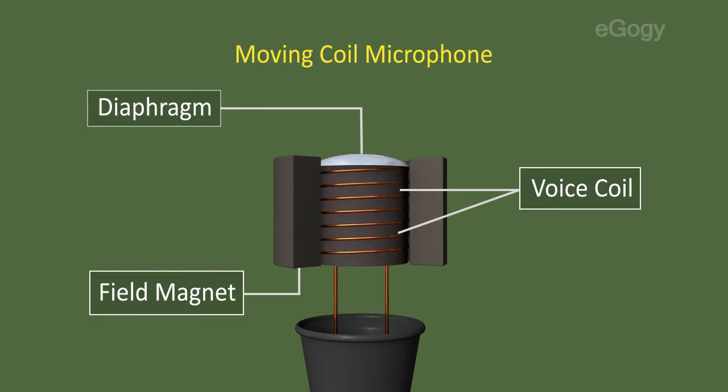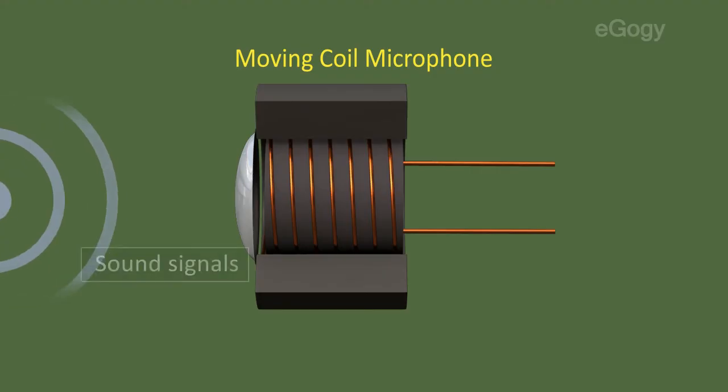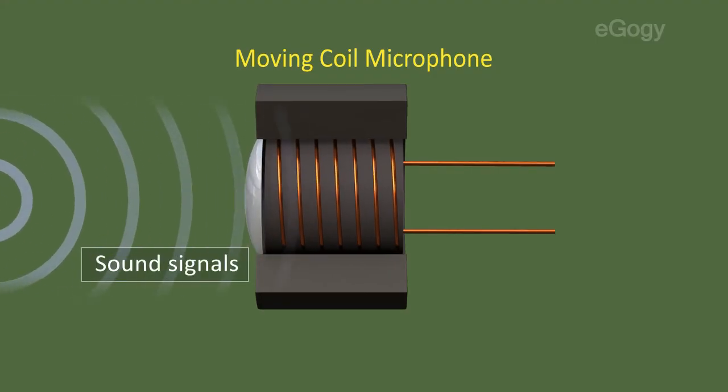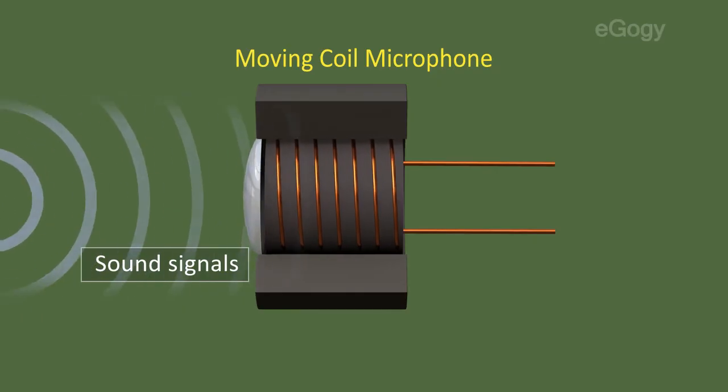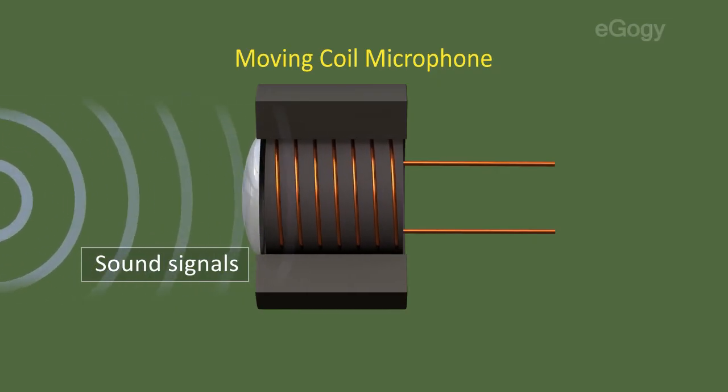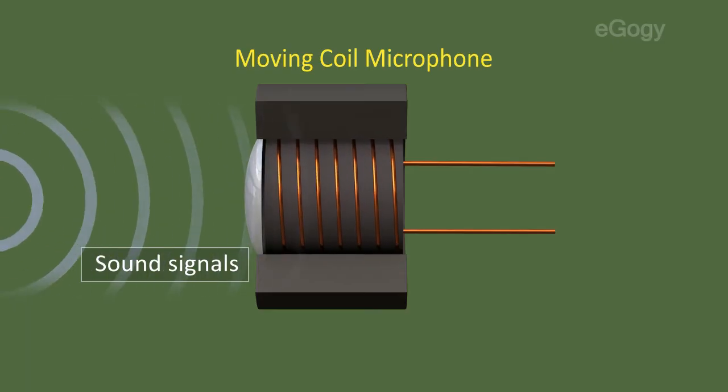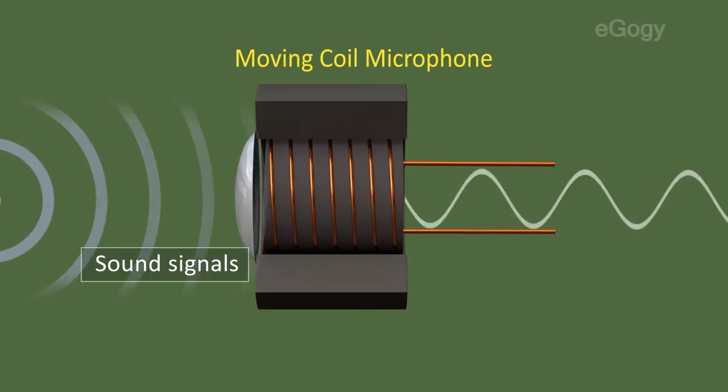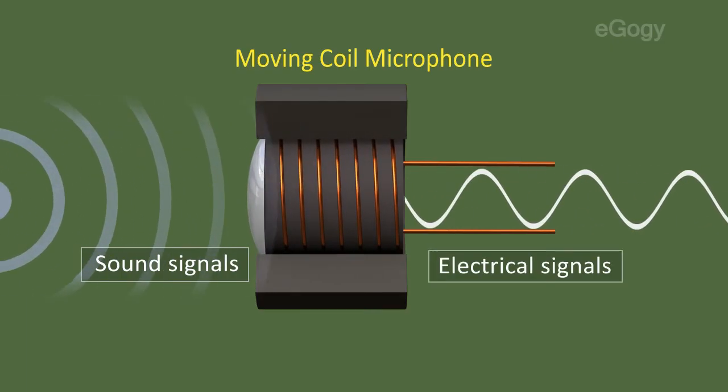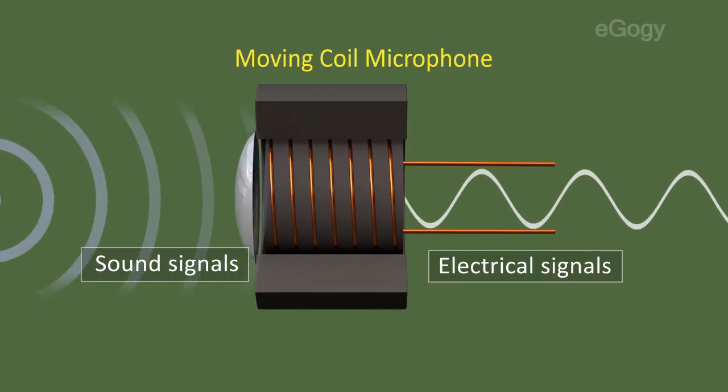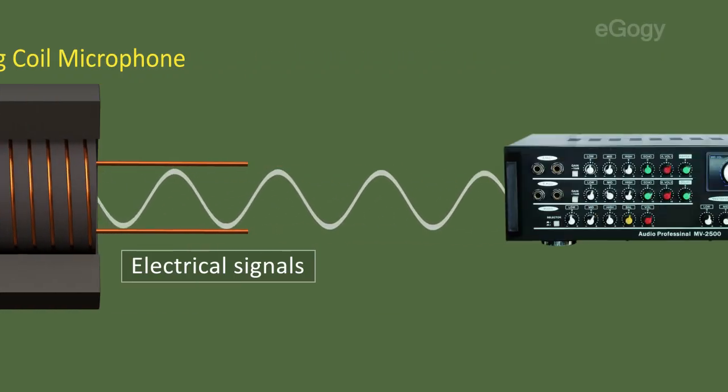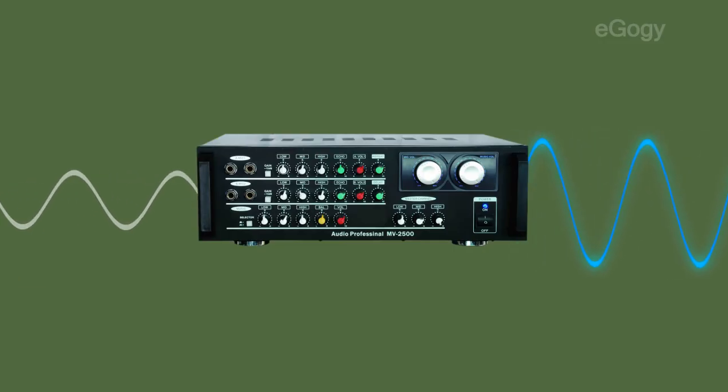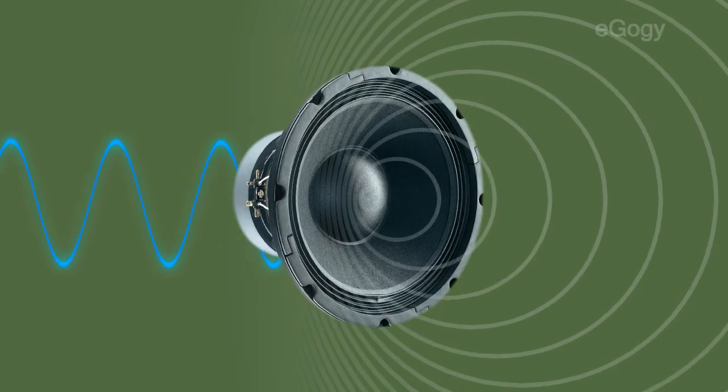Let's see how the microphone converts sound signals into electrical signals. The diaphragm vibrates when sound signals incident on it, and the voice coil also vibrates in accordance with the diaphragm. These vibrations cut the flux lines and thus electrical signals are induced in the voice coil. These signals are strengthened by using an amplifier and sent to a loudspeaker.